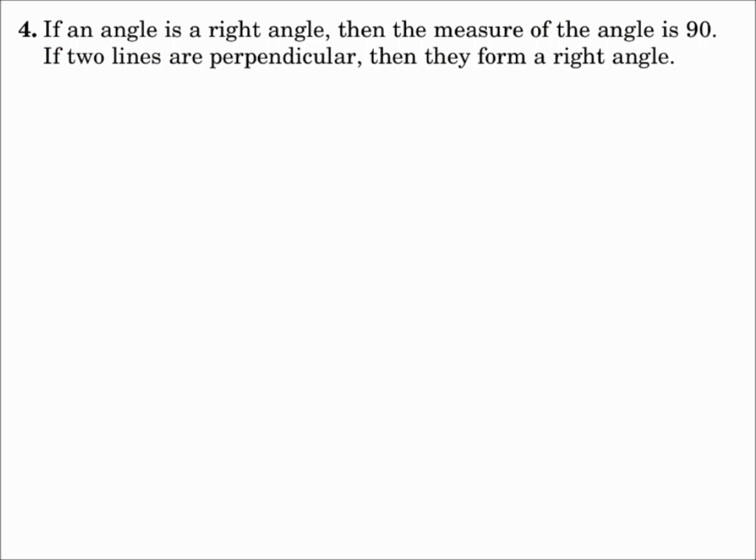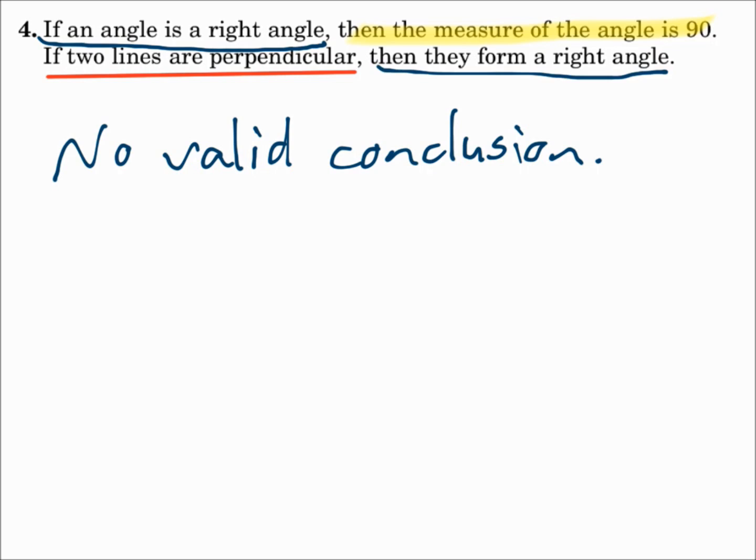Number four. If an angle is a right angle, then the measure of the angle is 90. If two lines are perpendicular, then they form a right angle. This doesn't flow right. There's no valid conclusion here. This says if P goes to Q, then R goes to Q. That's not syllogism at all.